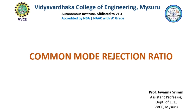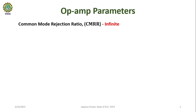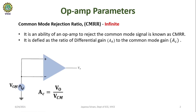Hello all. In this video I will solve a few problems on common mode rejection ratio. It is one of the parameters of op-amp. The common mode rejection ratio for an ideal op-amp will be infinite. It is the ability of an op-amp to reject the common mode signal, which is known as common mode rejection ratio, expressed as CMRR, and defined as the ratio of differential gain to the common mode gain.